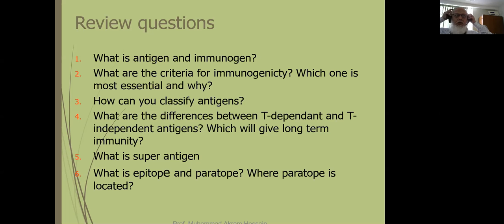The key questions we will address are: What are the criteria for immunogenicity? Which is most essential and why? How can you classify antigens? What are the differences between T-dependent and T-independent antigens? Which type gives long-term immunity? What is a superantigen? What are epitope and paratope, and where is paratope located?